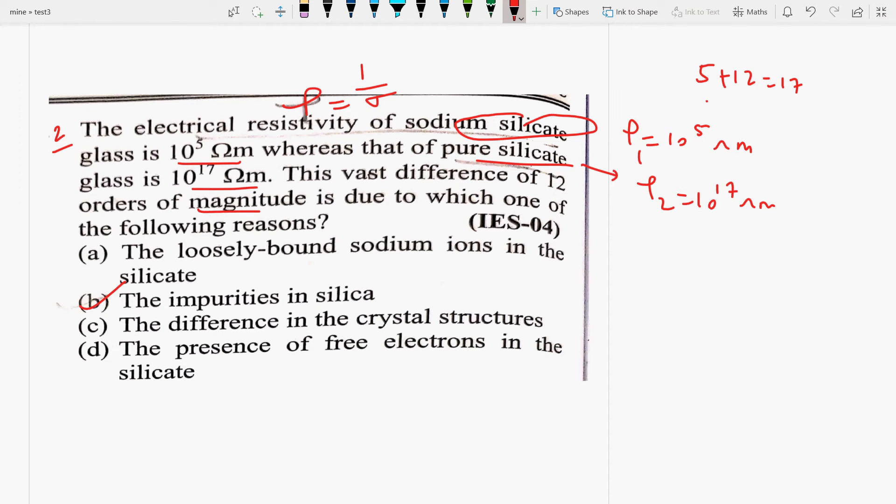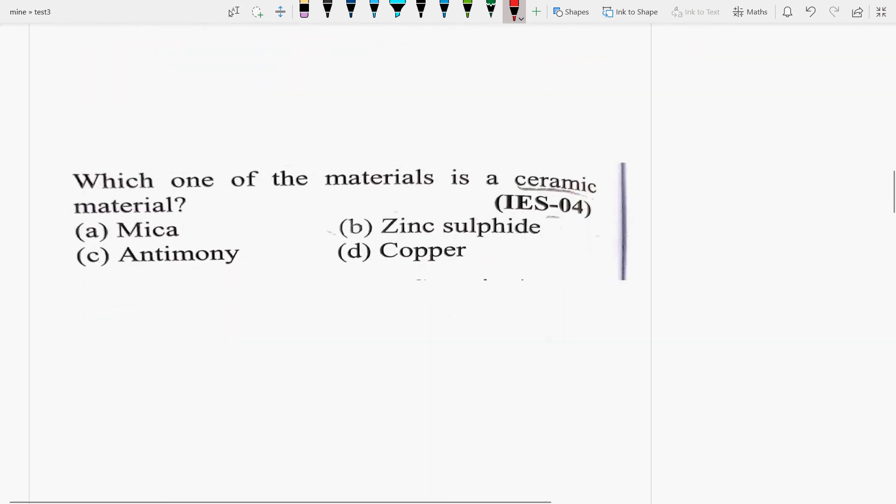Next question is your third question. Which one of the materials is a ceramic material? Mica, zinc sulfide, ZnS, antimony, Sn, copper, Cu. Which one of the materials is a ceramic material? So, this is zinc sulfide, which is a ceramic material.